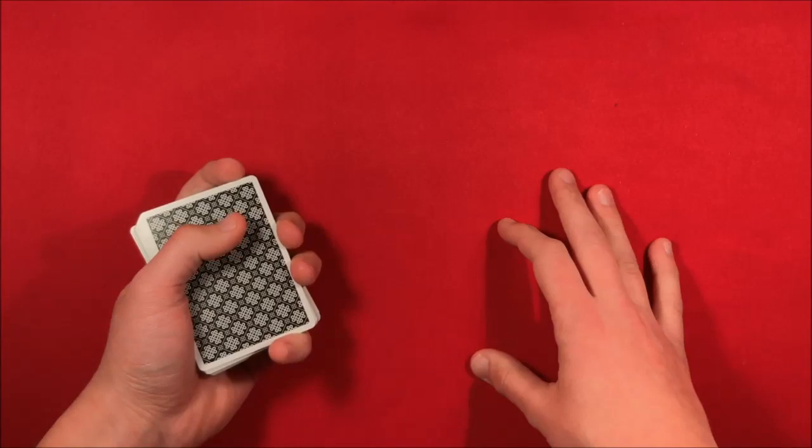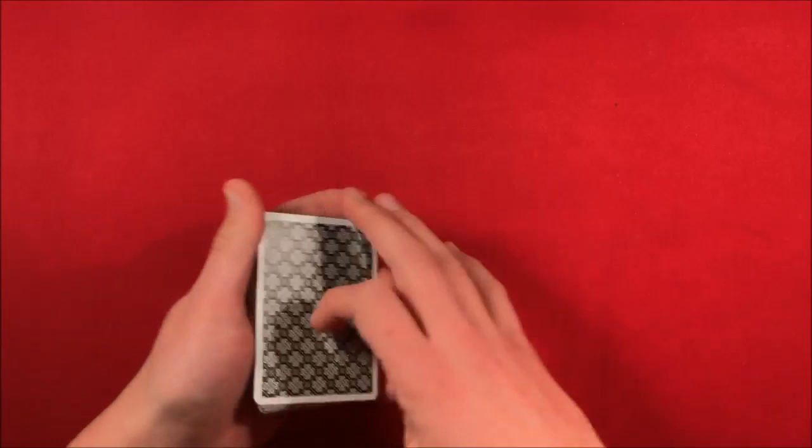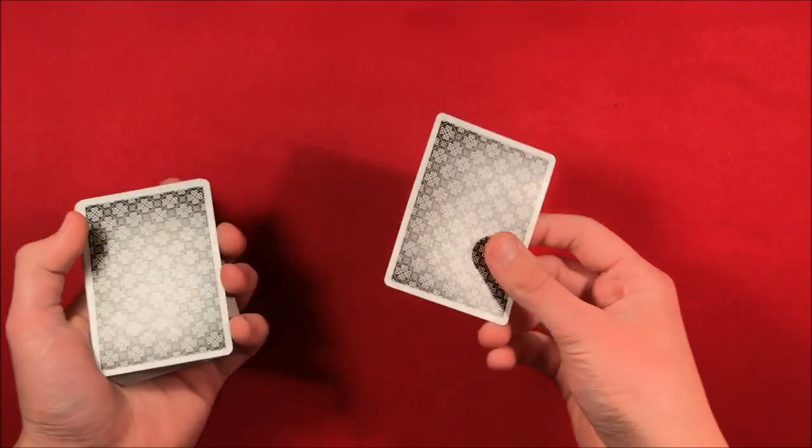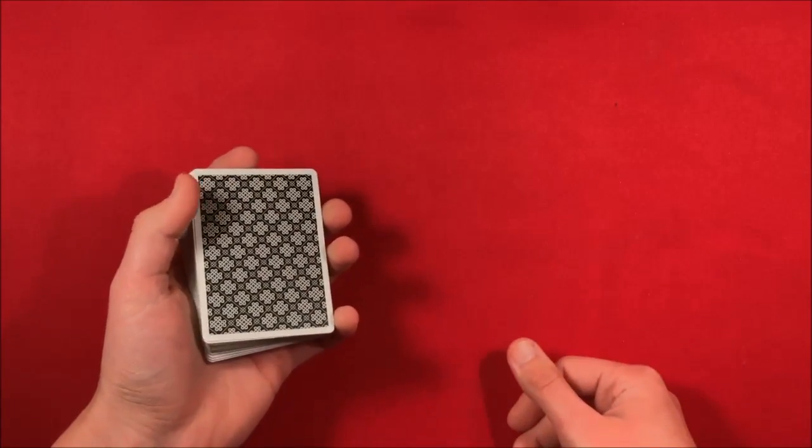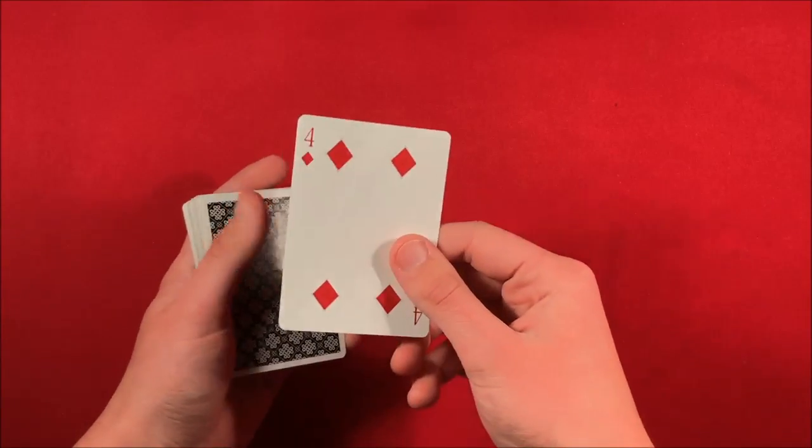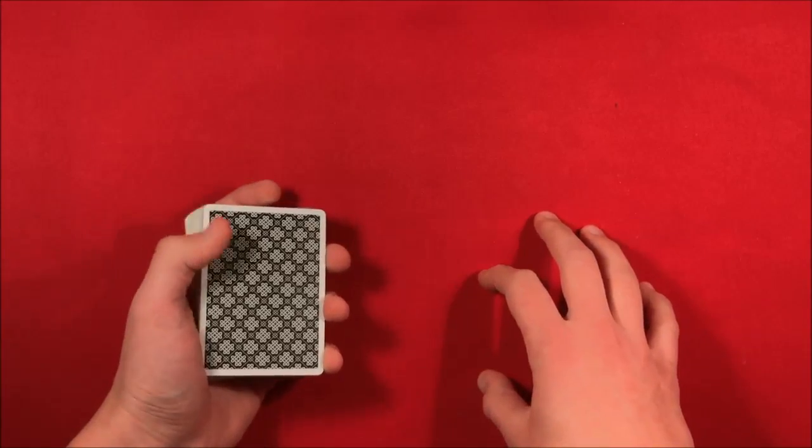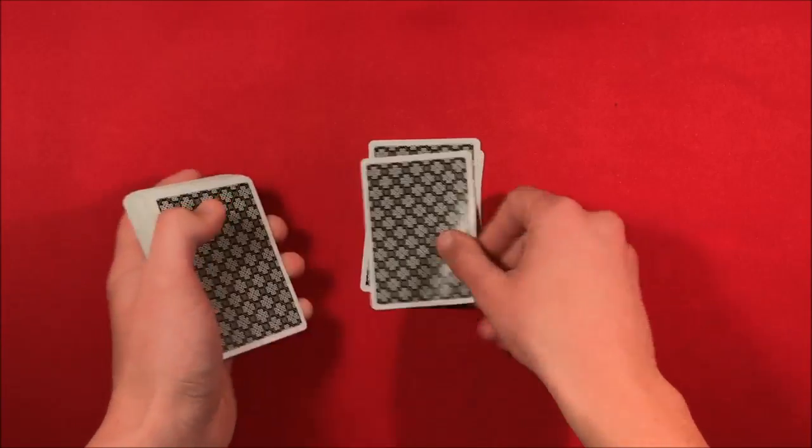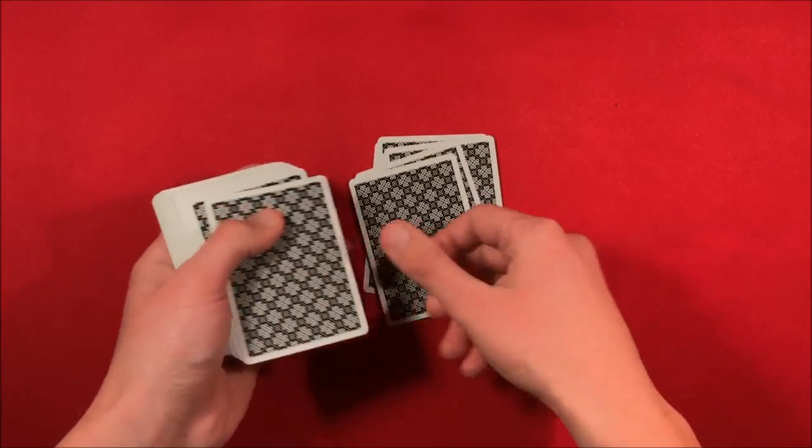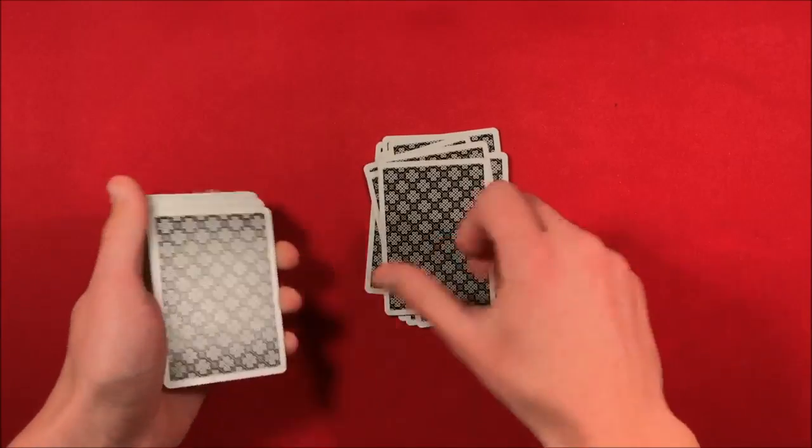Let's say they were going to pick a number like 13, so it's a little bit less. Let's say they wanted to pick 13 cards. What you can do here is you can either remember the top card, in this case the four of diamonds, or I'll show you what I did in the performance. So let's say they pick 13, so we have 1, 2, 3, 4, 5, 6, 7, 8, 9, 10, 11, 12, 13.